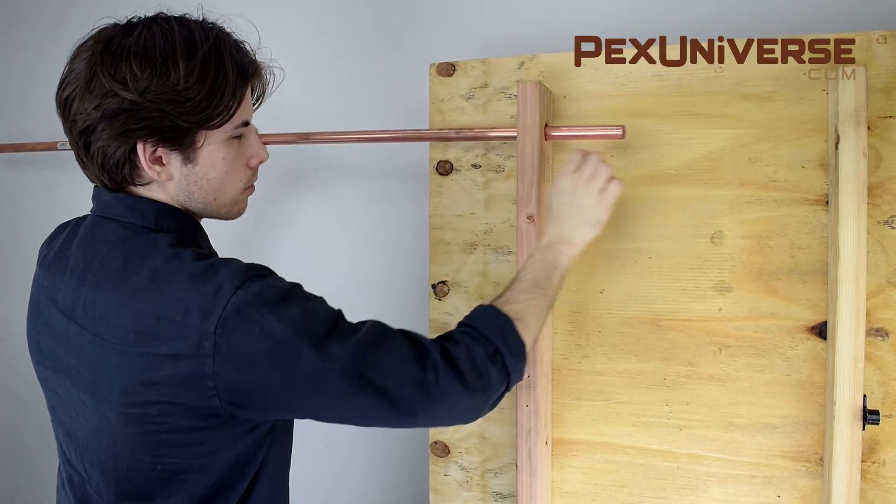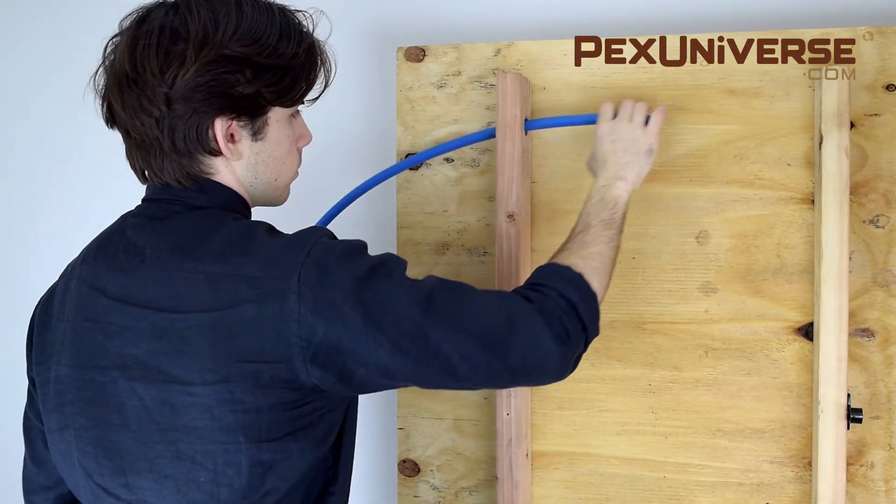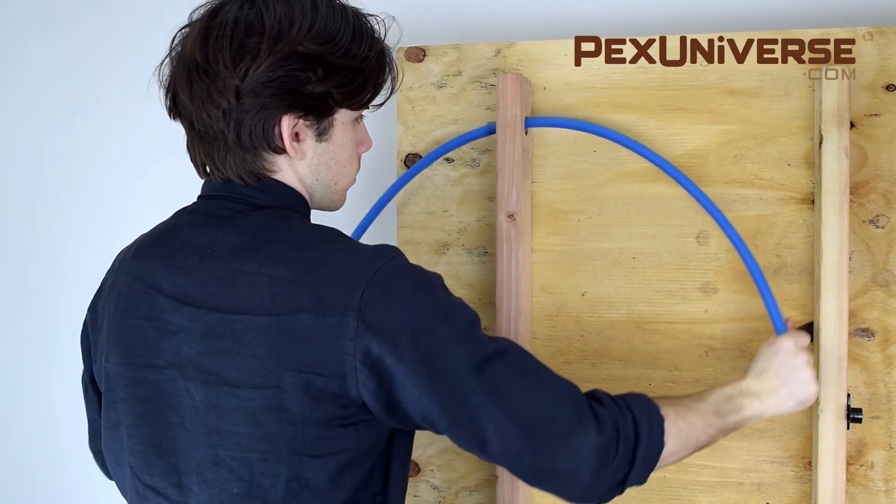Copper tube is more difficult to install and simply requires more work to move through the system. PEX's flexibility makes it a lot easier to install. You can bend it through the system easily.